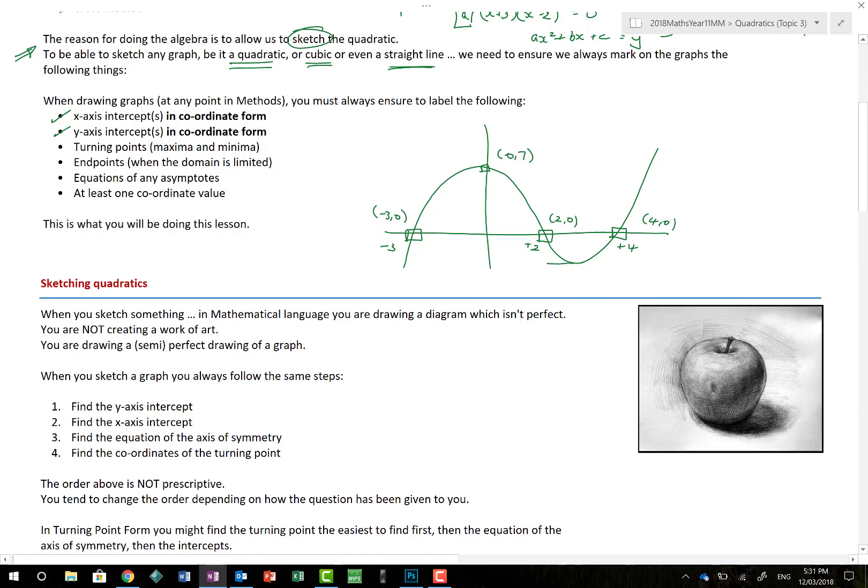My Y-axis intercept must be labelled as 0 comma 7, for example. It has to have a physical coordinate written beside it. Turning points. Now, in this situation here, anything that when we draw a tangent to a point and it has a 0 gradient, we know is a turning point. And in this situation here, I'd have to put some physical coordinate. Likewise here, assuming that that's not at that point.